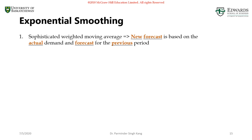When it comes to exponential smoothing, the new forecast is based on actual demand as well as the forecast for the previous period, which makes it more reliable and more effective than the other methods we discussed previously. It's widely used in industry and it's simple to use — it's not complicated.